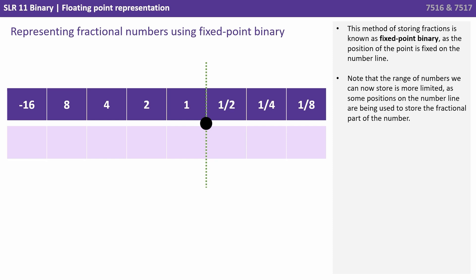This method of storing fractions is known as fixed point binary, as the position of the point is fixed on the number line. Note that the range of numbers we can now store is more limited, as some positions on the number line are being used to store the fractional part of the number.